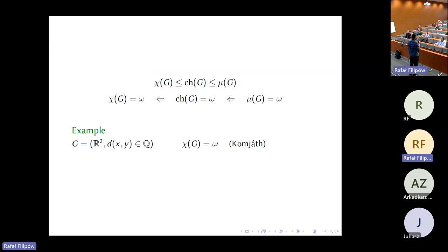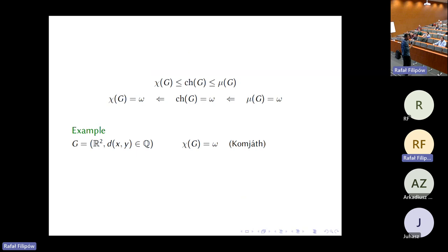Some interesting examples: first, the Euclidean plane ℝ² with the usual metric, where two points share an edge if their distance is rational. This is analytic, so we can ask what the chromatic number is — it's not obvious whether it's countable or uncountable. This is known: Peter Komjad proved that the coloring number is countable here. We will hopefully see a simpler argument for why this holds.